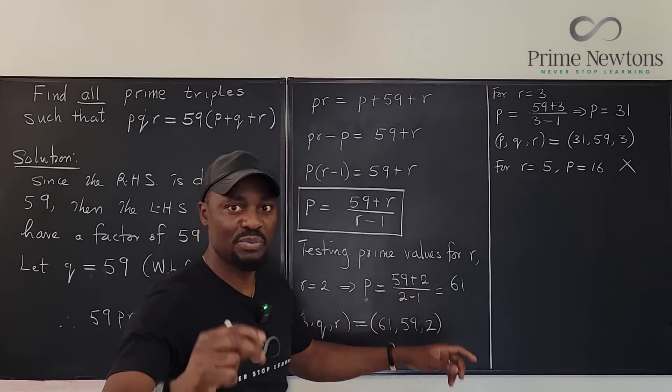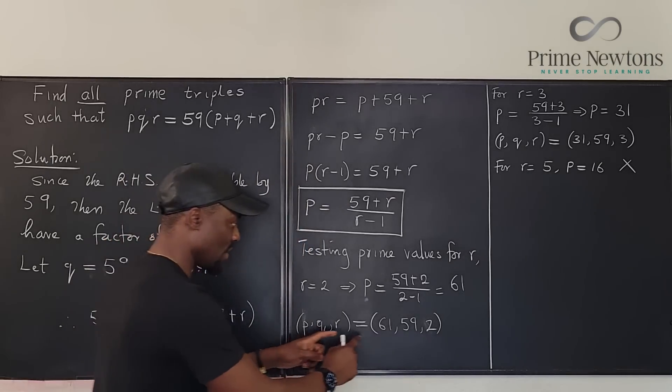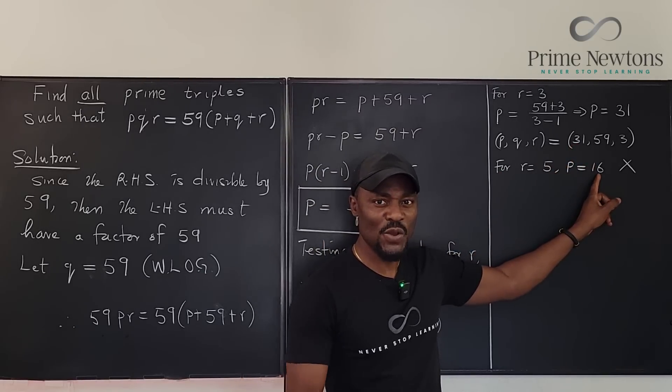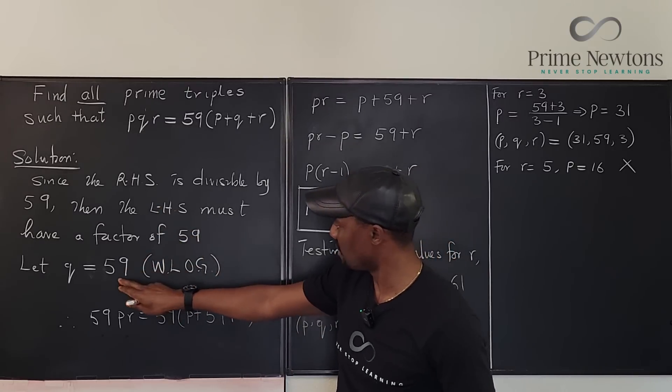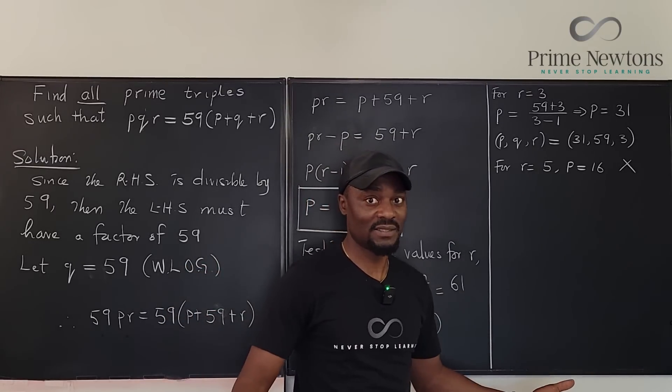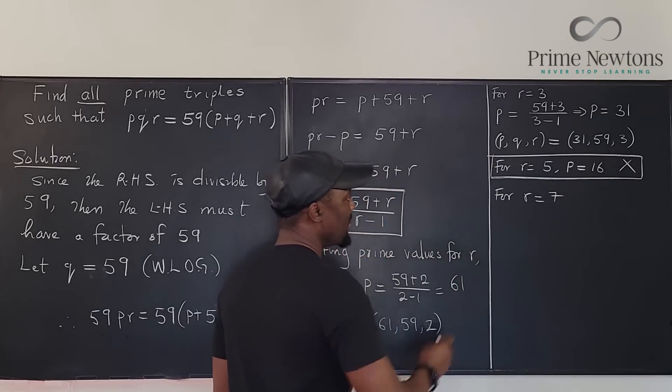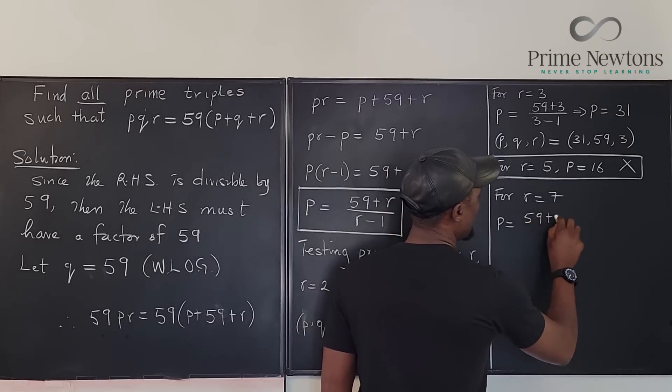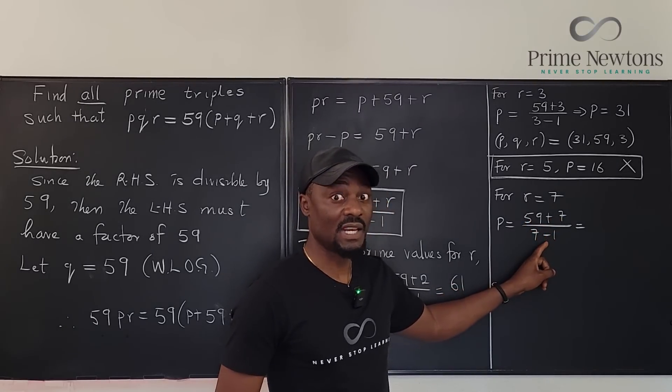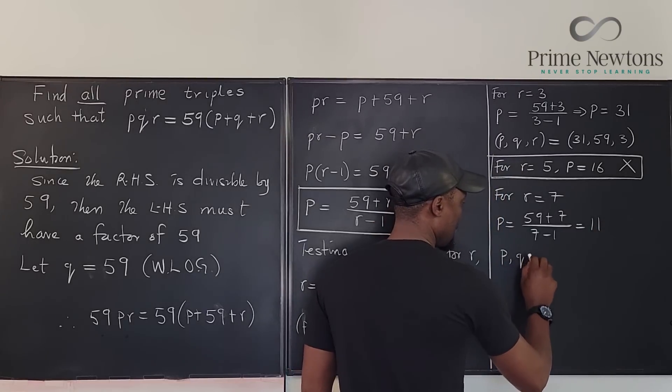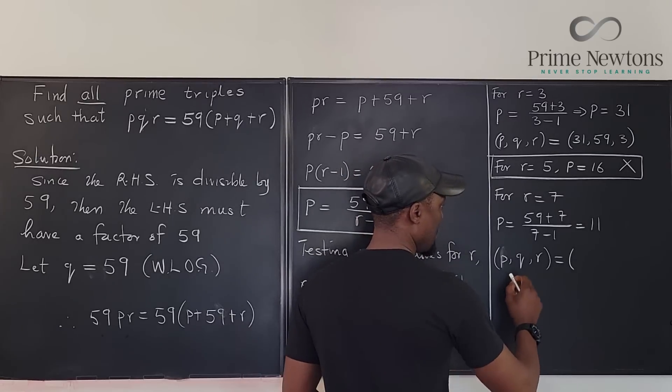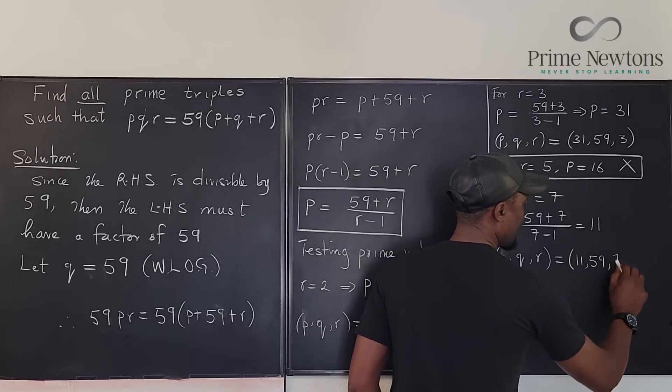Notice something about the values you're getting for P: P is getting smaller. We started with P being 61, and then P suddenly became 31. The next calculation we just did, P has become 16. So you notice that the values of P will be dropping as long as we keep this to be constant as 59. So it's going to get smaller, so eventually you're going to end up ending your whole test because there's nothing else that's going to come out of it. For R equals 7, P equals 59 plus 7 over 7 minus 1, that's 66 over 6, that's 11. That's a prime number, so we also have another solution: P is 11, Q is 59, and R equals 7.